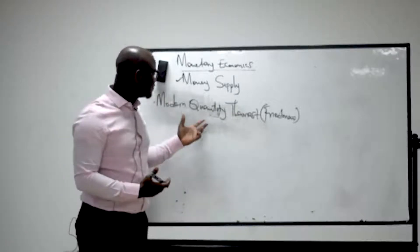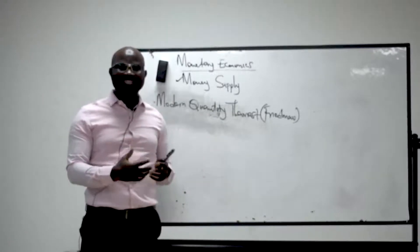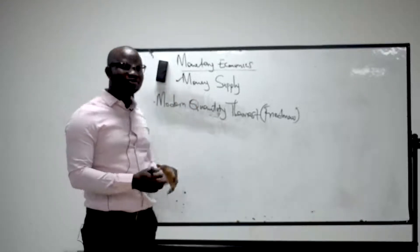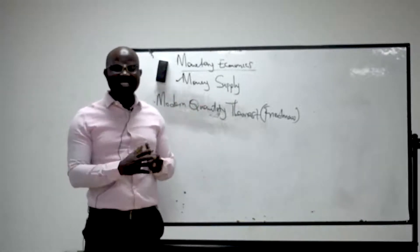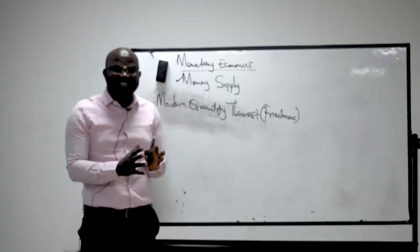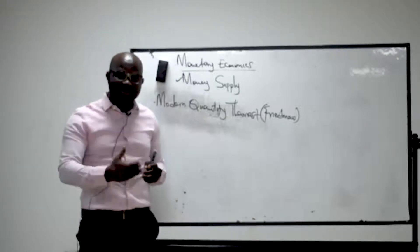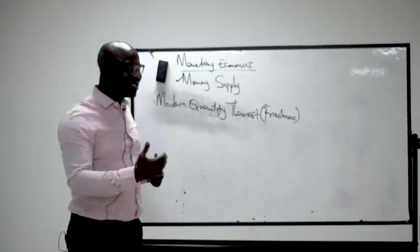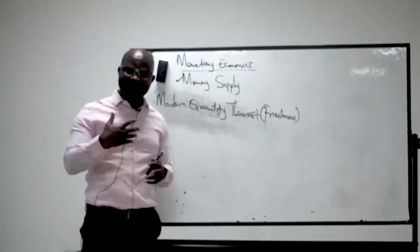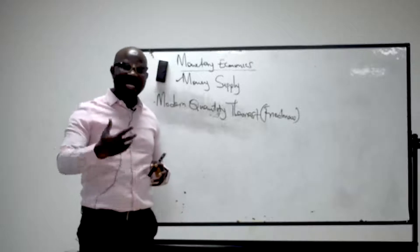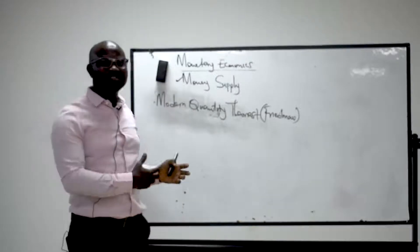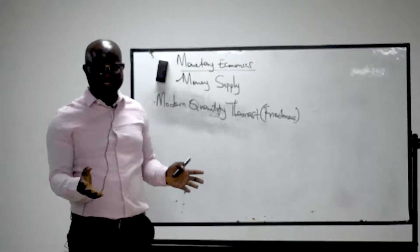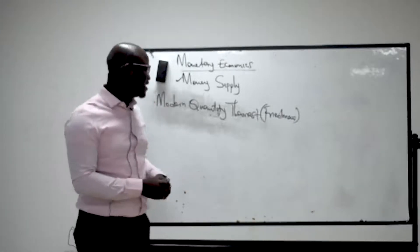Under Friedman's framework, they added the time deposit to their definition. The total money in the economy is a combination of the currency in the hands of the public plus the demand deposit and time deposit. The time deposit is the fixed deposit of the customer with the commercial bank.